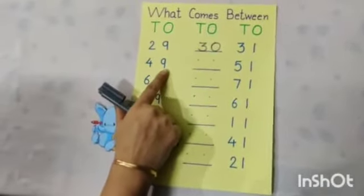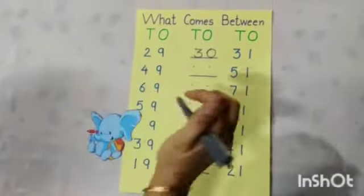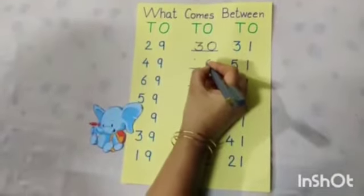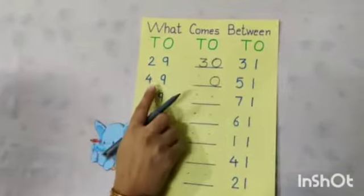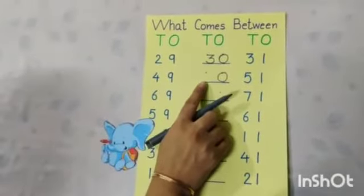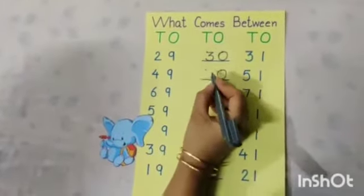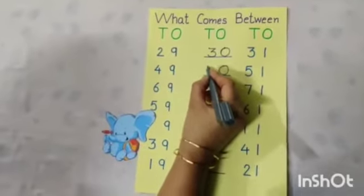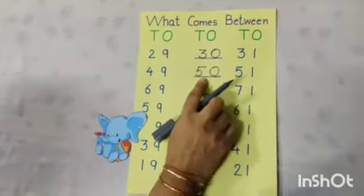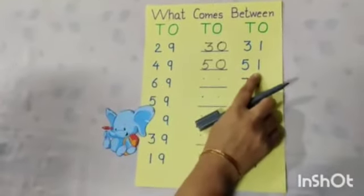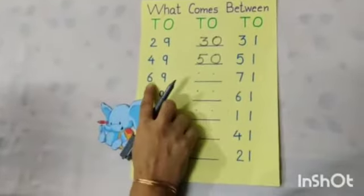Next number is 49, between 51. So, here will come 0, and say bye to 4 and say hello to next number 5. 5, 0, 50. So, 50 comes between 49 to 51.